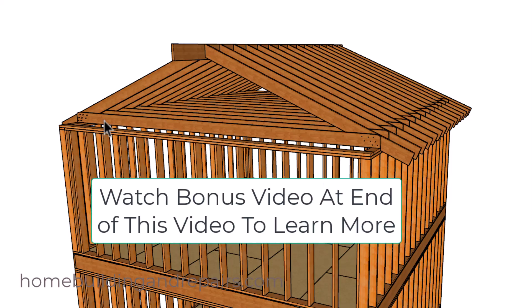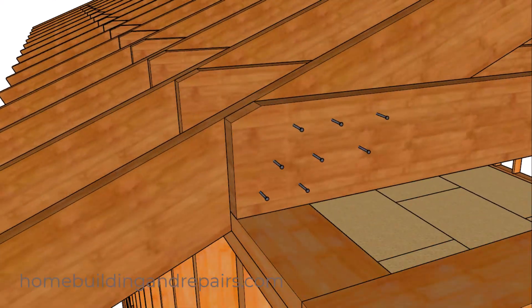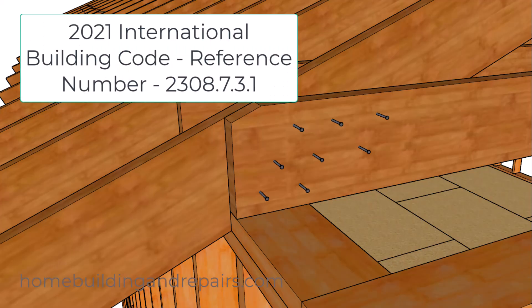So there is a building code chart that has a nailing schedule to connect the rafter tie or ceiling joist to the roof rafter that will provide you with an amount of nails you will be required to use. However if you raise the roof rafter tie then you will need to add a few more nails.